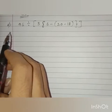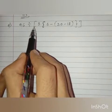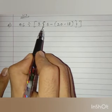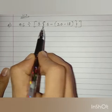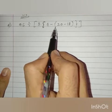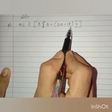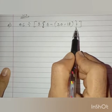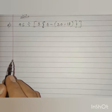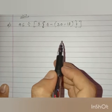Question number 2 is 96 divided by big bracket open, 3, curly bracket open, 6 minus, common bracket open, 20 minus 18, common bracket close, curly bracket close, big bracket close. Now, which bracket do we need to remove first? We do not have a bar bracket, so after bar bracket we have to remove the common bracket, that is the small bracket.